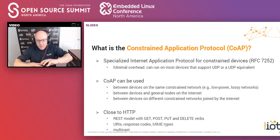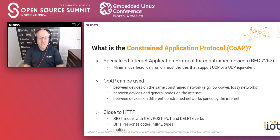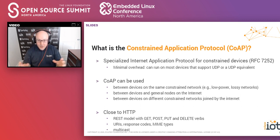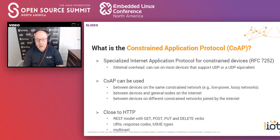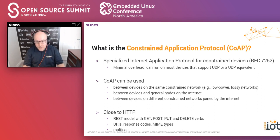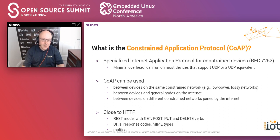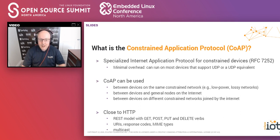CoAP can be used on a centralized constrained network — for example, a low-power network in the field with a bunch of sensors in a factory. But it can also be connected over the general internet, and you can even join separate constrained networks together to provide a connected distributed environment. CoAP by design is very close to HTTP: it uses the REST model with GET, PUT, POST, and DELETE verbs, has URIs, response codes, and MIME types. One important feature is that it leverages multicast heavily — for device discovery, you send a multicast packet and whatever device on the network responds to it.